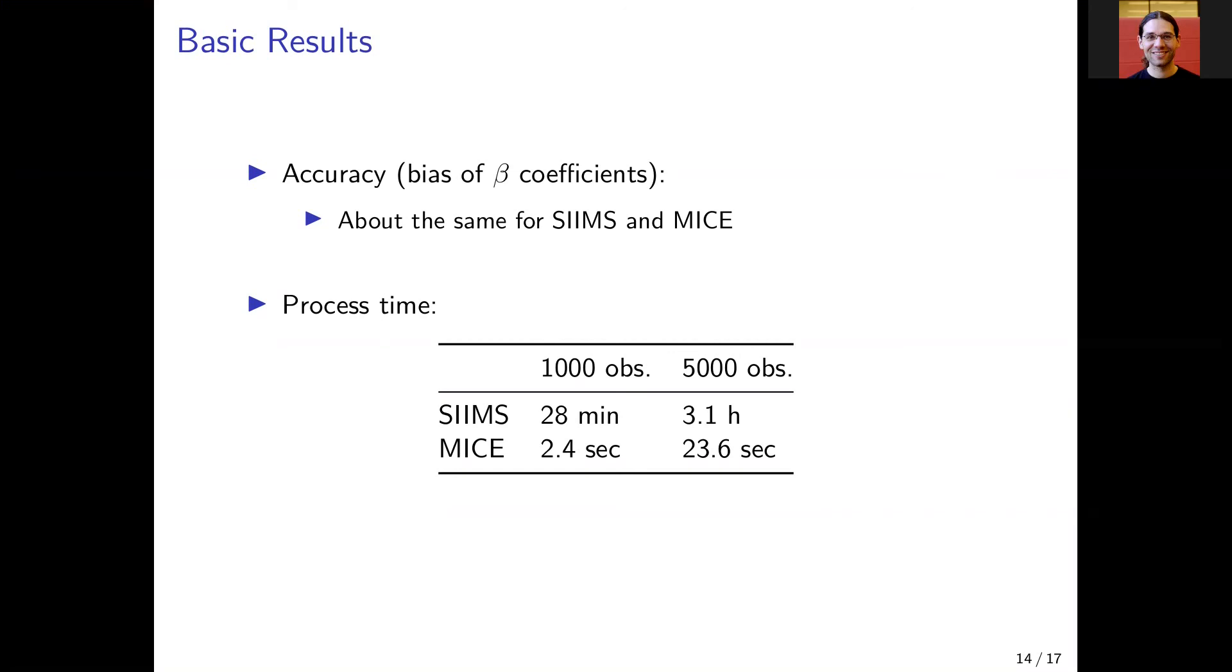However, for process time, MICE is doing the imputation job much faster than SIMS, especially for a higher number of observations, here for 5,000 observations.